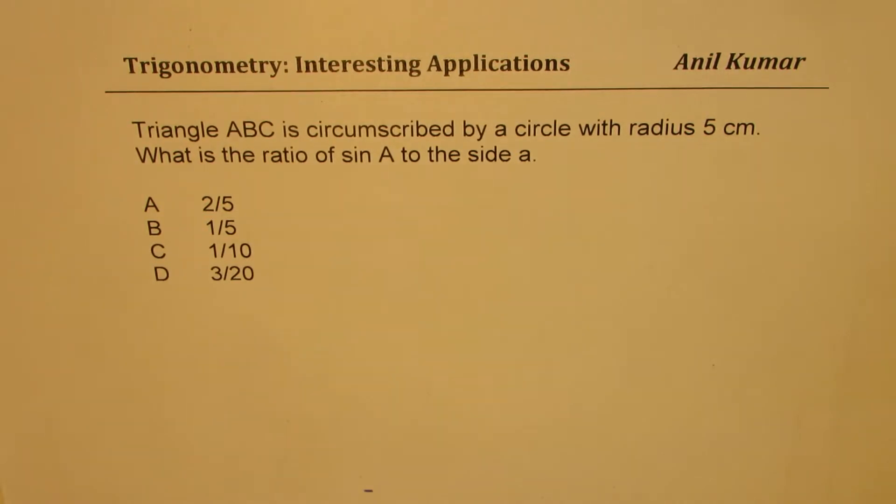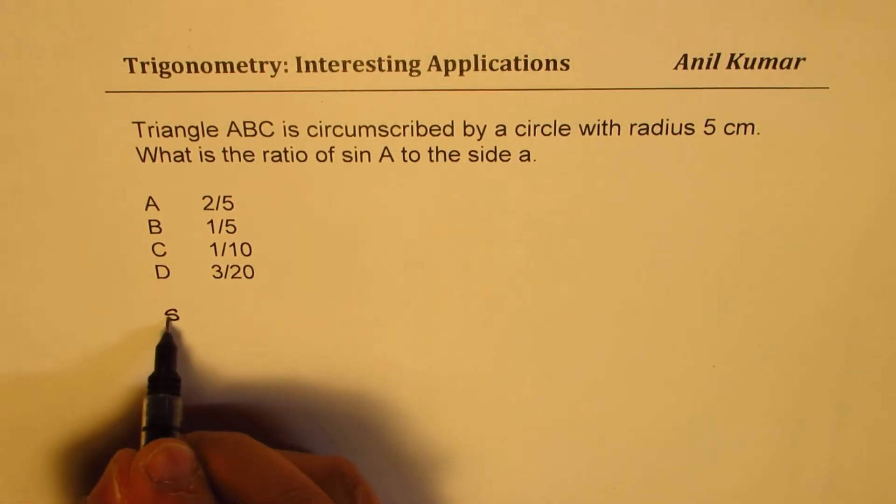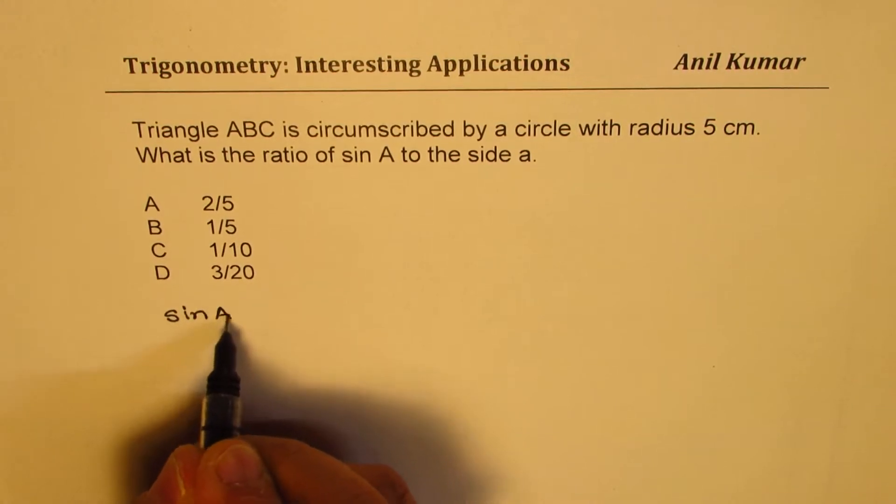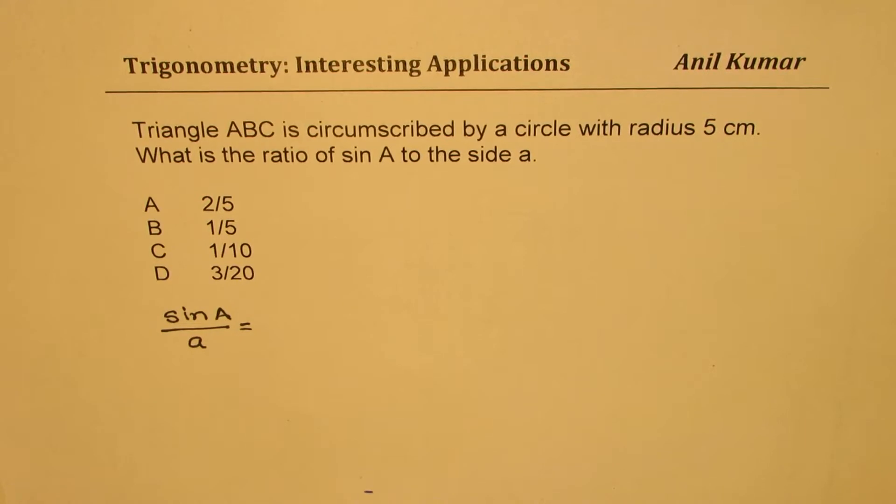The question here is triangle ABC is circumscribed by a circle with radius 5 centimeters. What is the ratio of sine A to the side A? So let's try to understand this question. We want to find the ratio of sine of A over A in a triangle. We know this ratio is normally constant so sine B over B will also be equal to sine A over A.